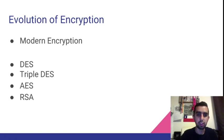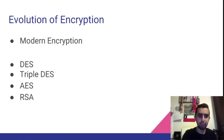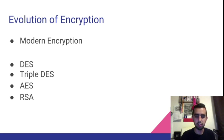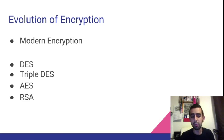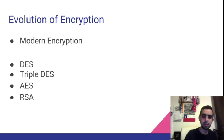Hello everyone, my name is Piero Viseras, and I will be talking about the evolution of encryption. As Ben mentioned earlier, I'll be focusing on how encryption has evolved from the 70s till now. Within that time, encryption was known as modern encryption, usually starting right after World War II, after the mechanical encryption. A famous machine known as Enigma used mechanical encryption. I'll be discussing DES, Triple DES, AES, and RSA encryption, which leads into the conversation of symmetric and asymmetric encryption.